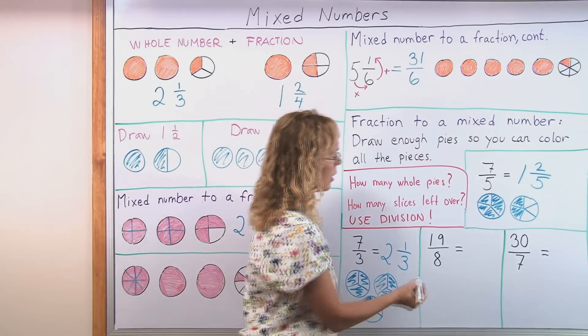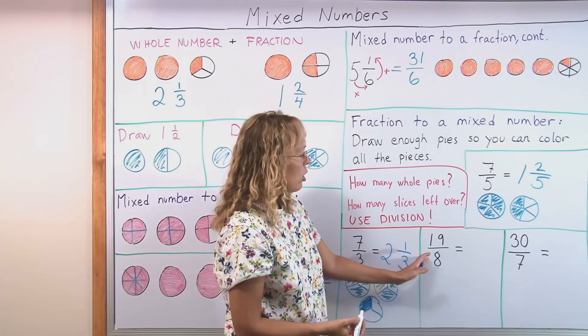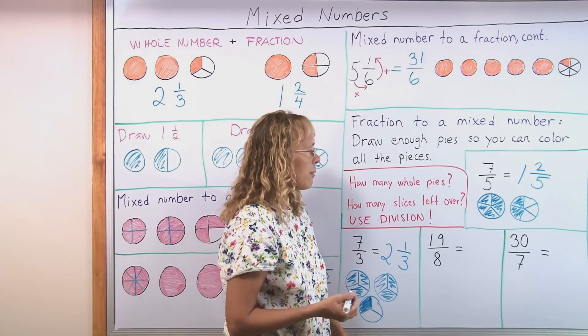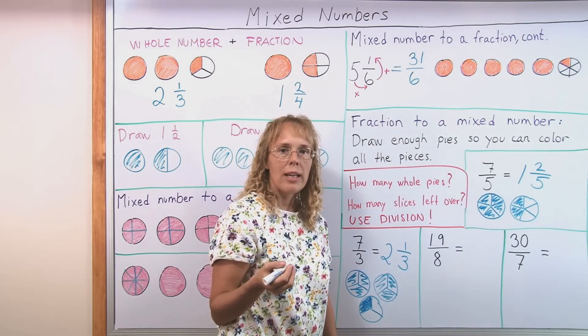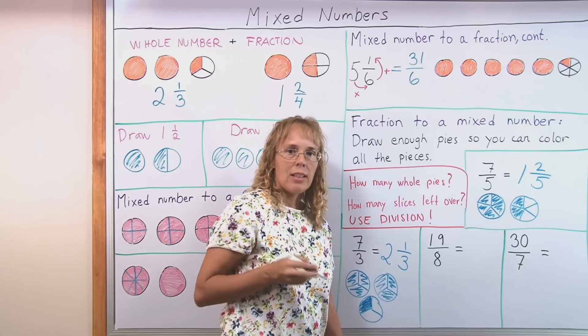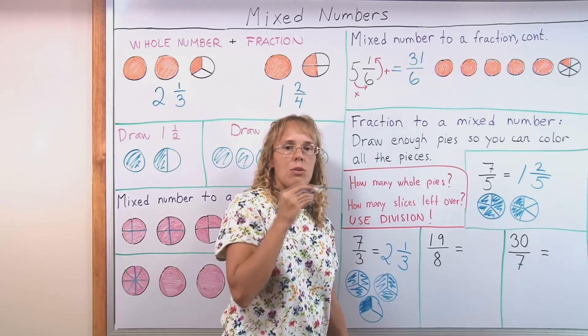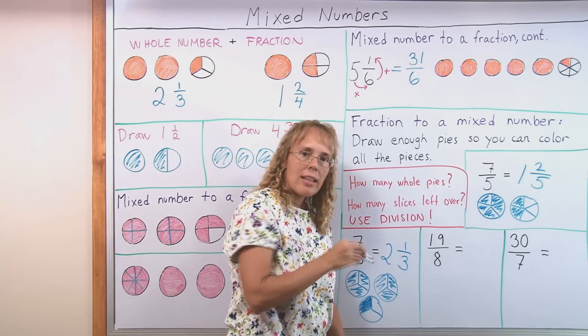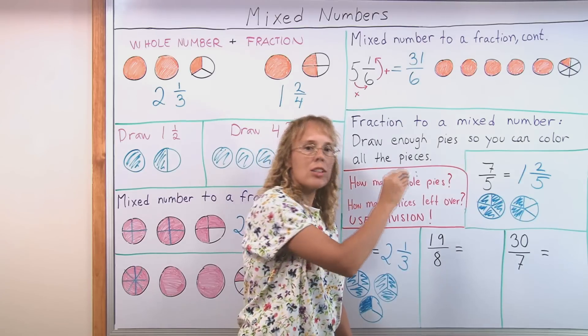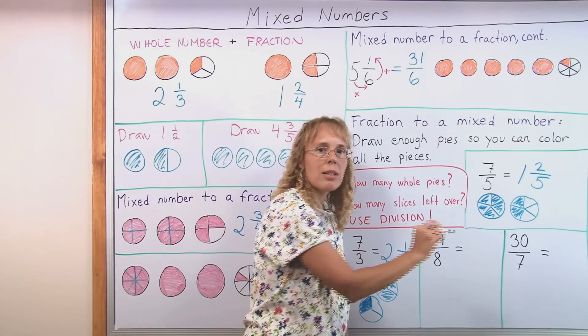Let's look at it again. If I have a fraction 19 over 8, I need to think how many whole pies will I get if each whole pie takes 8 eighths. 8 eighths into first whole pie. 8 eighths into the second whole pie. And so on and so on. How many whole pies will I get? You divide. You think how many times does 8 go into 19.